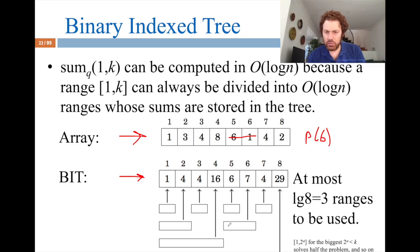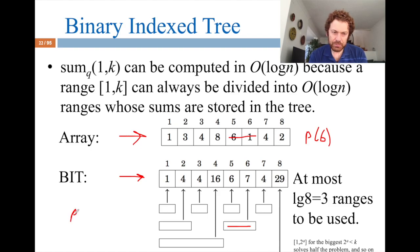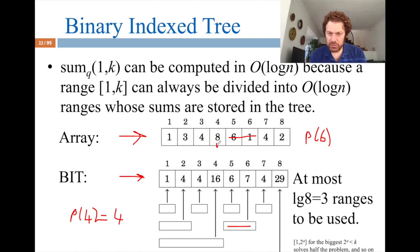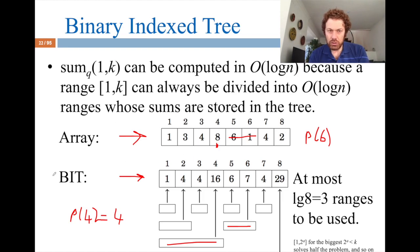To answer sum(1, k): start with sum = 0. While k > 0, add T[k] to sum, then set k = k - p(k). There are at most log n such iterations. For example, sum(1, 6): add T[6] = 7, set k = 6 - 2 = 4; add T[4] = 16, set k = 4 - 4 = 0; done. Total = 23. For an arbitrary range sum(a, b), use the prefix trick: sum(1, b) minus sum(1, a-1), both taking O(log n).